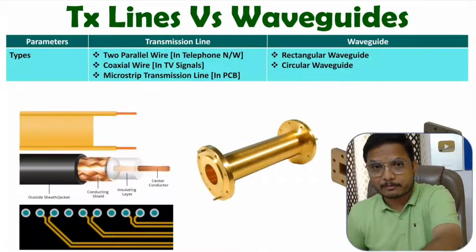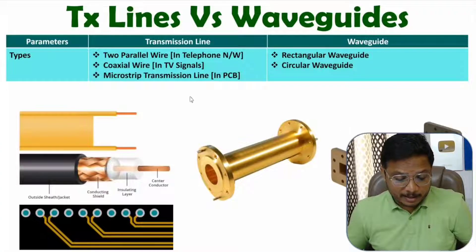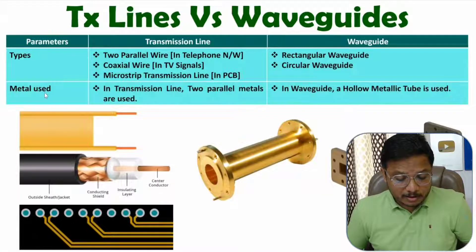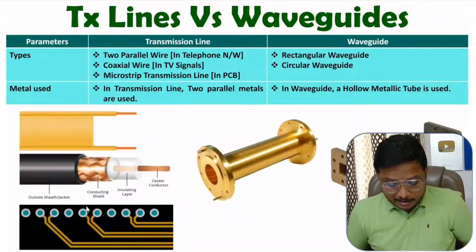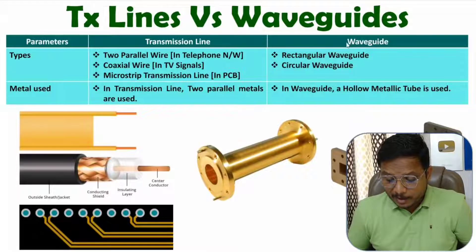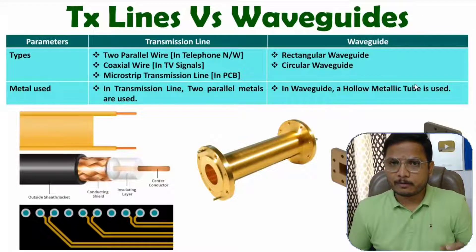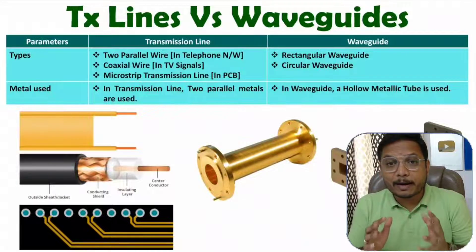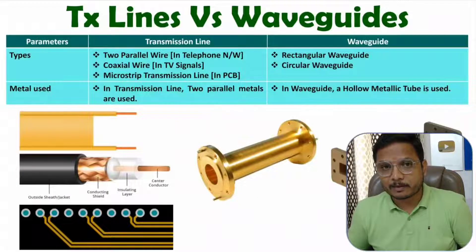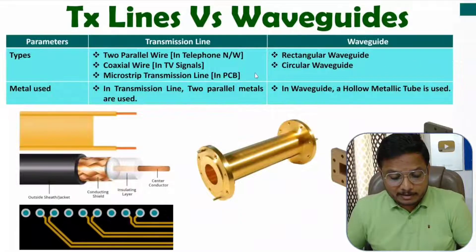The second parameter is based on the metal used. In a transmission line we have two parallel wires, and in microstrip transmission line we also have two parallel metals. In a waveguide we have a hollow metallic tube, so in a waveguide more metallic material is used compared to a transmission line.